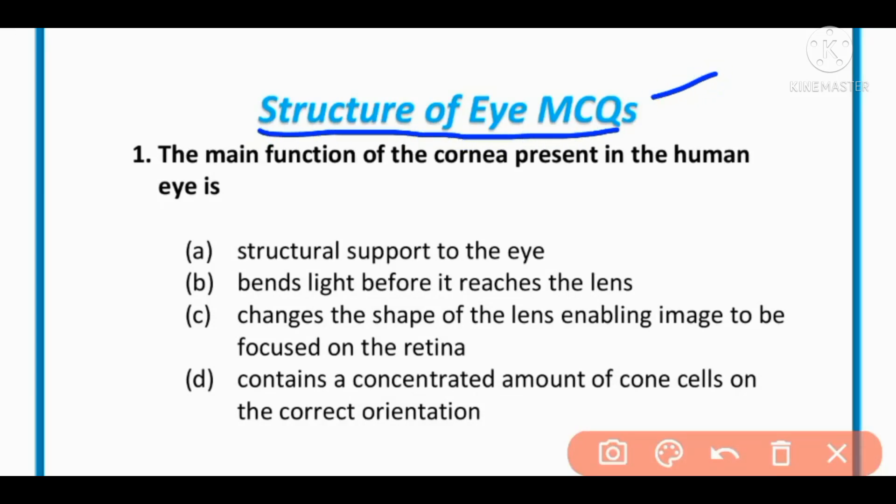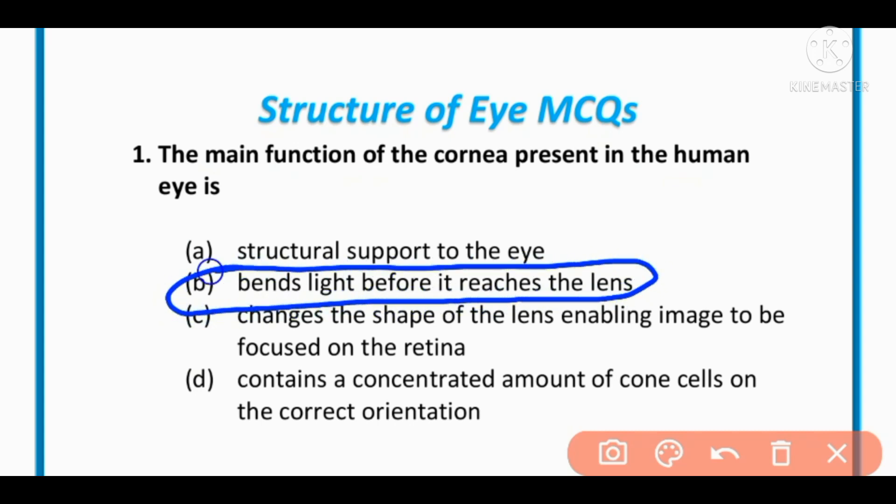Structure of eye MCQs. MCQ number 1: The main function of the cornea present in the human eye is: (a) structural support to the eye, (b) bends light before it reaches the lens, (c) changes the shape of lens enabling image to be focused on the retina, (d) contains a concentrated amount of cone cells on the correct orientation. The correct option is B: bends light before it reaches the lens.